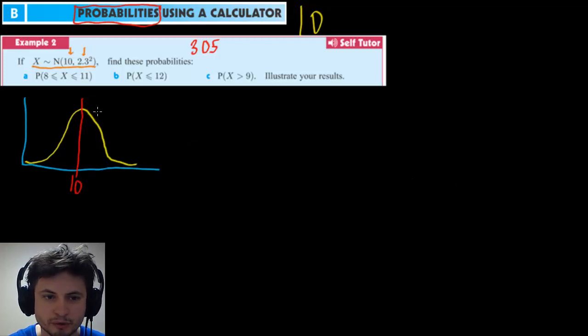And then we have our normal distribution. This is standard deviation of 1 and the standard deviation here and here is 2.3. So this area is 2.3 and this area is 2.3 as well. So once again mean is 10 and standard deviation is 2.3.